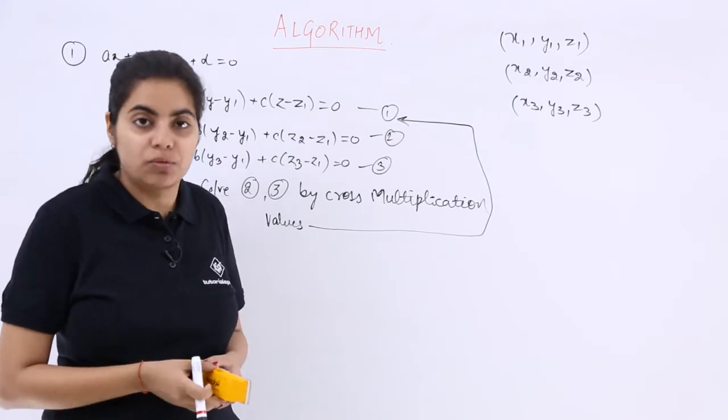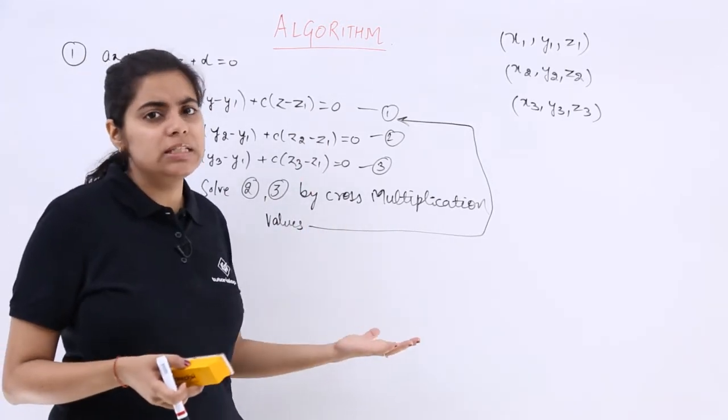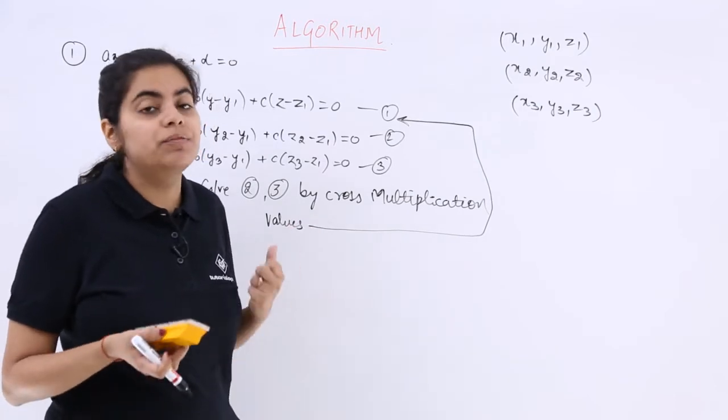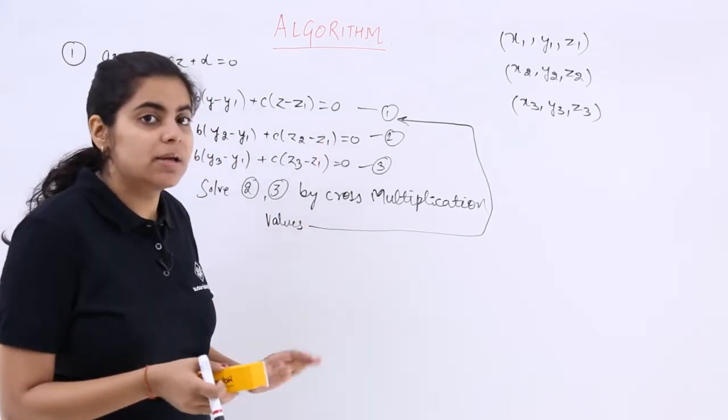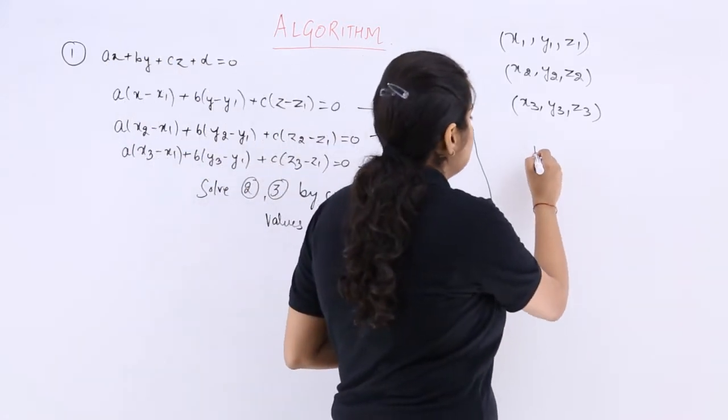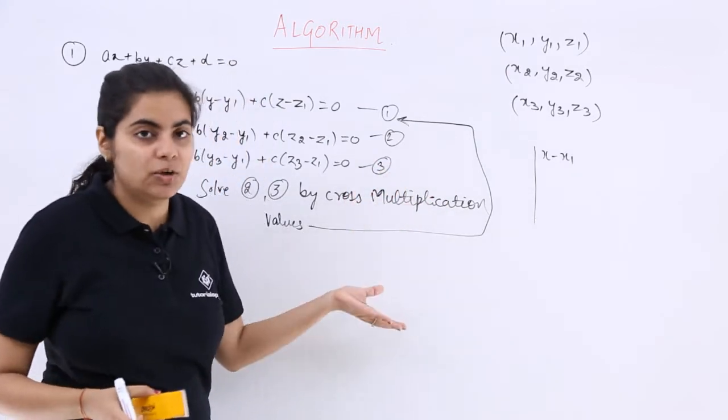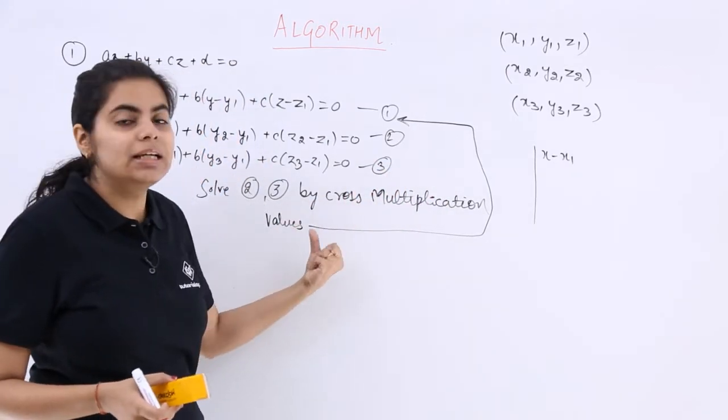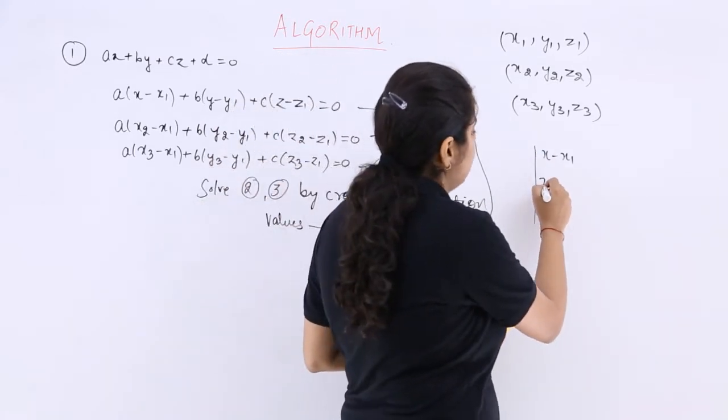When you put them in equation number 1, you will get the required equation of a plane. So either follow this method but this becomes very tedious and very lengthy. So what we are going to do? In that circumstance, we will not follow this method but adopt a very direct technique, because even when you eliminate abc by cross multiplication, the resultant will be the same that is obtained by solving this determinant which I am going to write now.